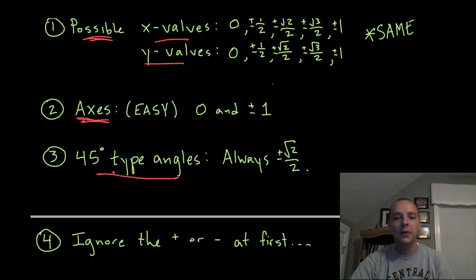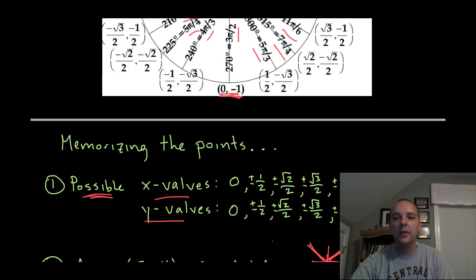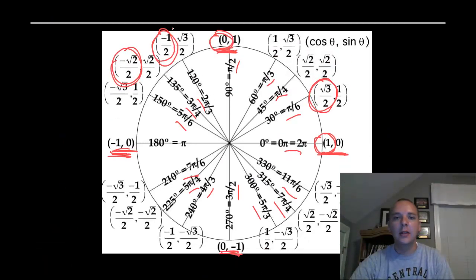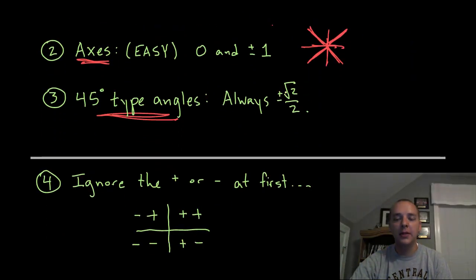Now the 45-degree type angles — referring to angles that are either 45 degrees or some mirror image of 45 degrees in any of the four quadrants. If you look at these, the pattern is easy to see: they are all the same. They all have root 2 over 2. Some have a difference of sign, but that is simply due to the quadrant they are in. The 45-degree type angles always have root 2 over 2 and nothing else — no 0's, no 1's, no one-halves, no root 3 over 2's.